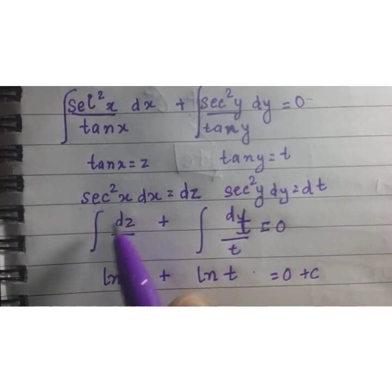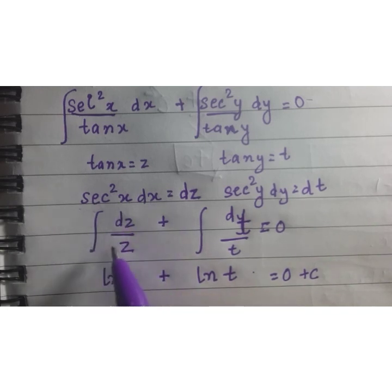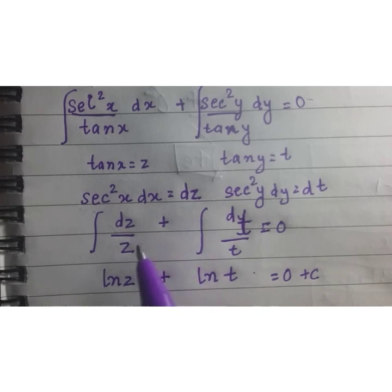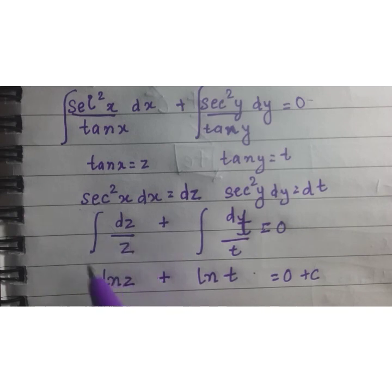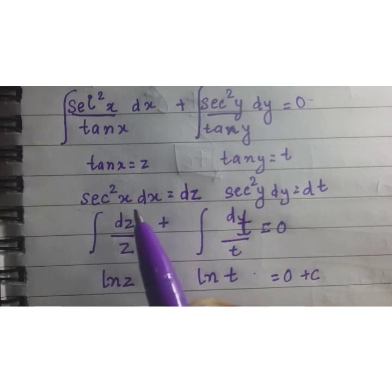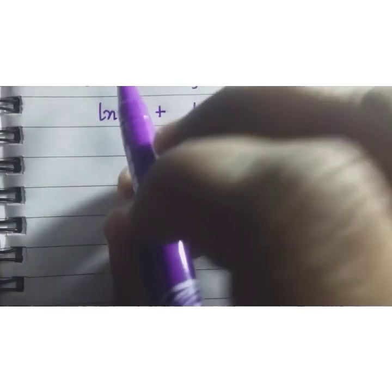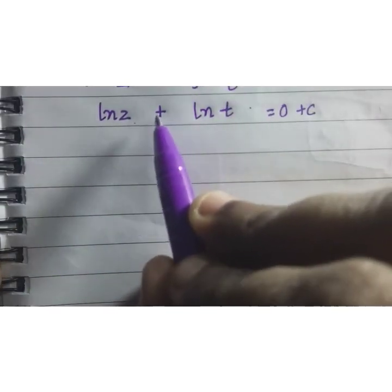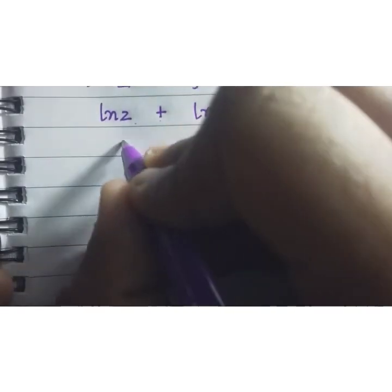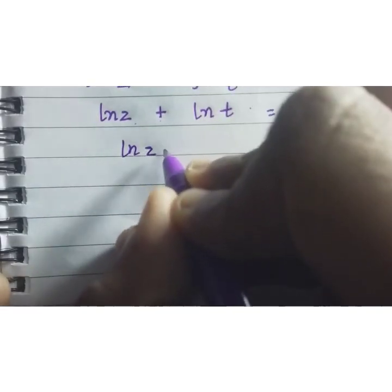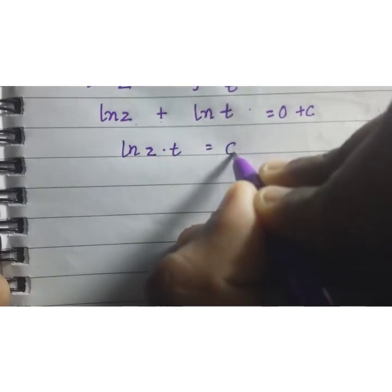Now, I would like to tell that integration of this form becomes ln(z) because when we differentiate we get 1 by z and when we integrate we get ln(z). Differentiation is reverse of integration and vice versa. ln(z) plus ln(t) can be written as ln(z·t) that becomes c.